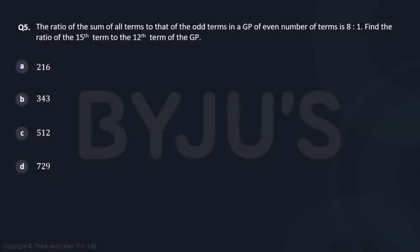The next question: the ratio of the sum of all terms to that of the odd terms of a GP of even number of terms.